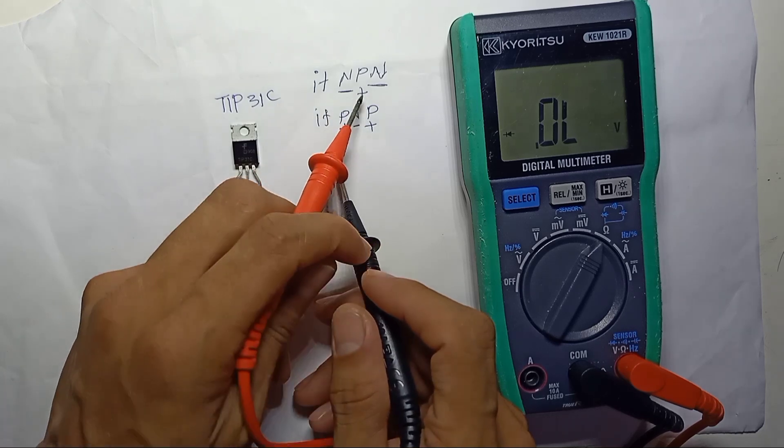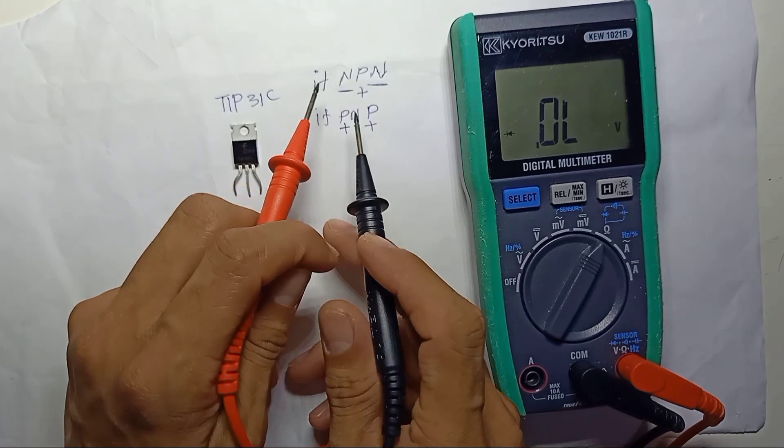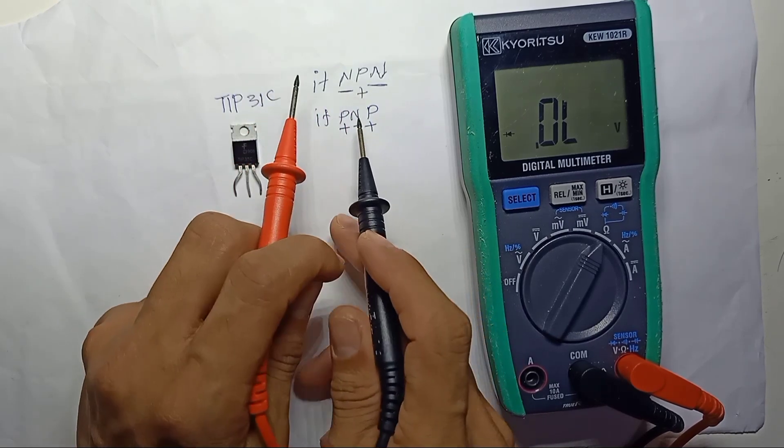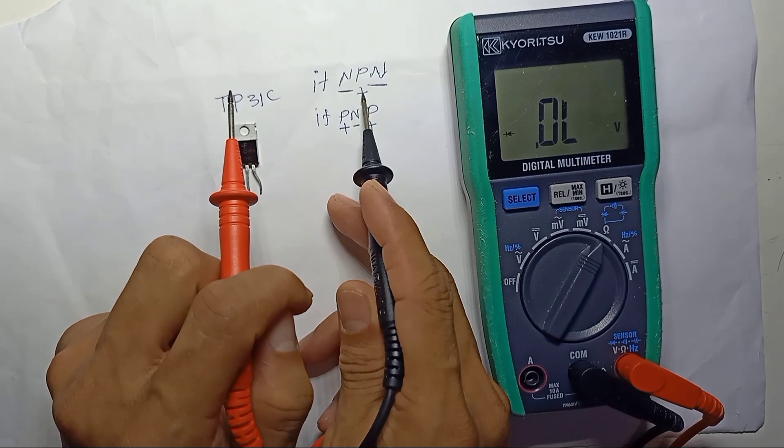So base is 1 here, which means this is 2 times of N and 1 time is P. So this transistor is NPN.